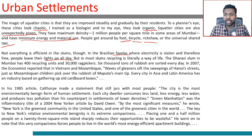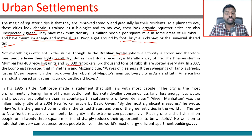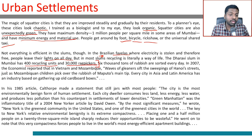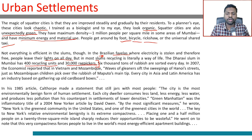In most slums, recycling is literally a way of life. The Dharavi slum in Mumbai has 400 recycling units and 30,000 rag pickers. 6,000 tons of rubbish are sorted every day. In 2007, The Economist reported that in Vietnam and Mozambique, waves of gleaners sift the sweepings of Hanoi's streets, just as Mozambican children pick over the rubbish of Maputo's main tip.